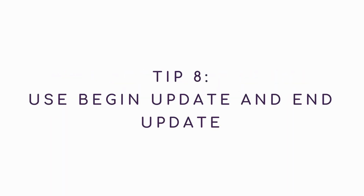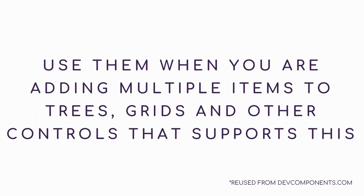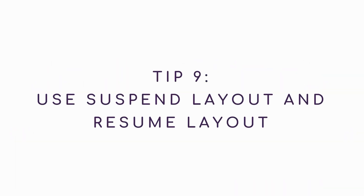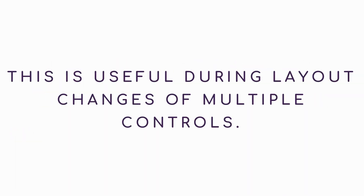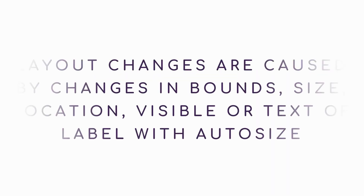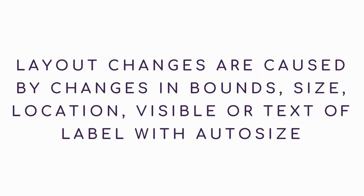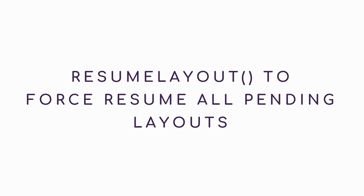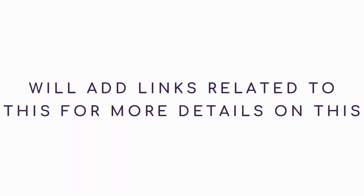Tip 8: Use BeginUpdate and EndUpdate. Use them when you are adding multiple items to trees, grids, and other controls that support this. Tip 9: Use SuspendLayout and ResumeLayout. This is useful during layout changes of multiple controls. Layout changes are caused by changes in bounds, size, location, visible, or text of a label with AutoSize. Suspend the layout of the parent before changes and resume layout to force all pending layouts. Links will be added for more details.